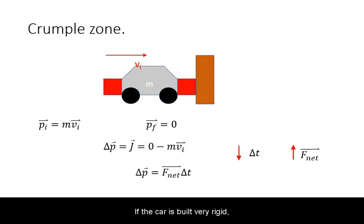If the car is built very rigid, then the total stop time will be very short. Hence the force on the car and the driver inside it must be very large to deliver the same impulse.